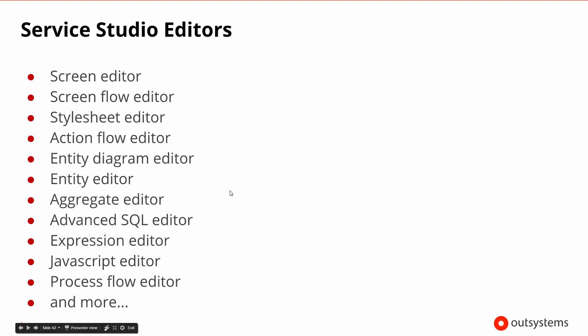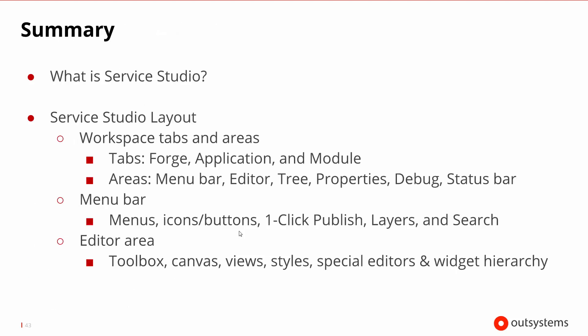While working in the editor areas, there are many different types of editors. We were just looking at the screen editor, but we may have flows inside of the screens to do actions. We have style sheet editors, entity editors and entity diagrams, expressions and JavaScript editors. So there are many different types of editors, and we were only looking at one. But the editing area behaves in a very similar way — it just changes what types of edits we can make.